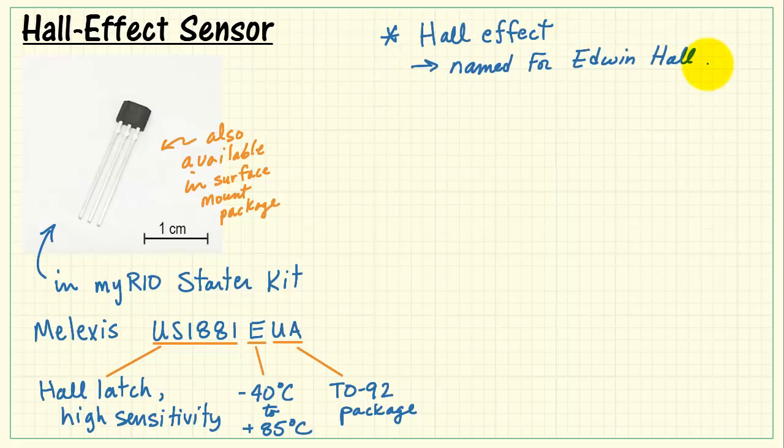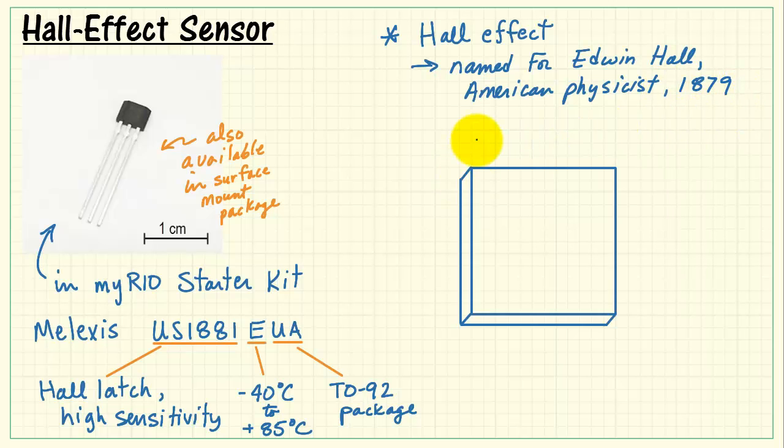Now the Hall Effect was discovered by Edwin Hall in 1879. He was an American physicist. And let's take a look at how this works.